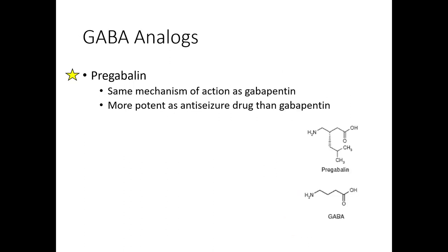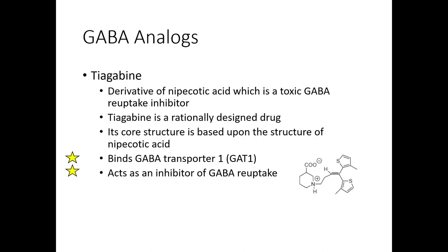The third GABA analog is pregabalin — same mechanism as gabapentin. You need to match those two together. I'm going to show you a summary table at the end of this slide deck to help you get things organized.